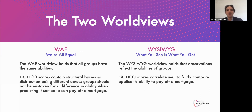There are two worldviews with some associated acronyms: we're all equal and what you see is what you get. The we're all equal worldview states that groups have the same abilities, so any structural bias being different should not be mistaken for difference in ability. The what you see is what you get worldview states that observations reflect the abilities of groups.